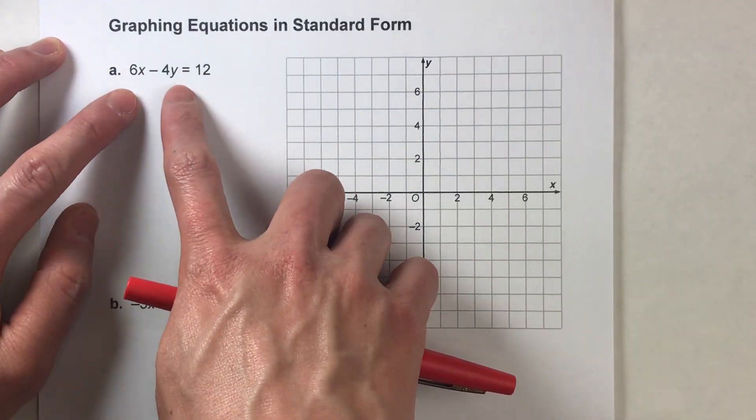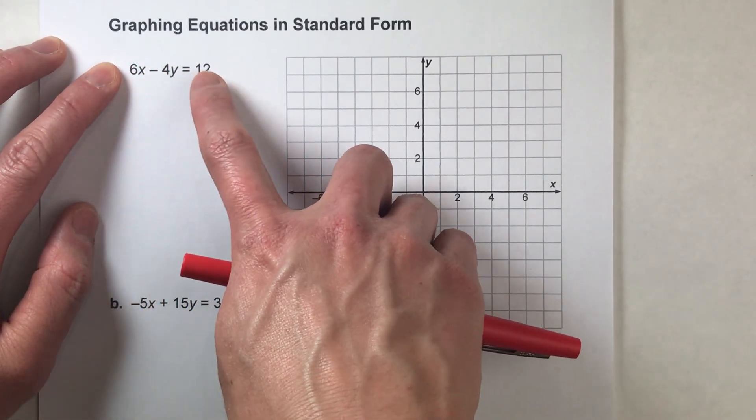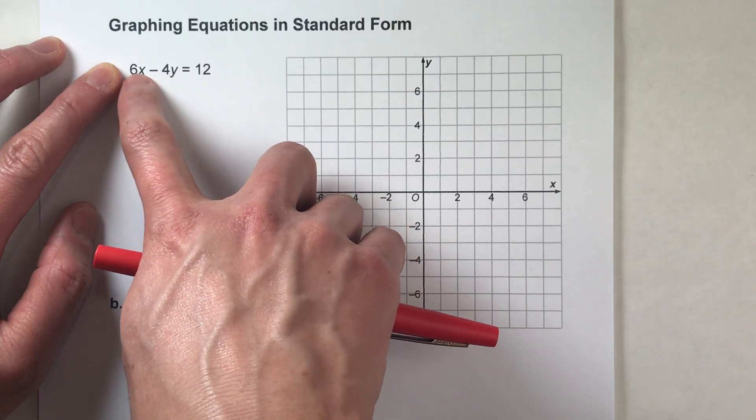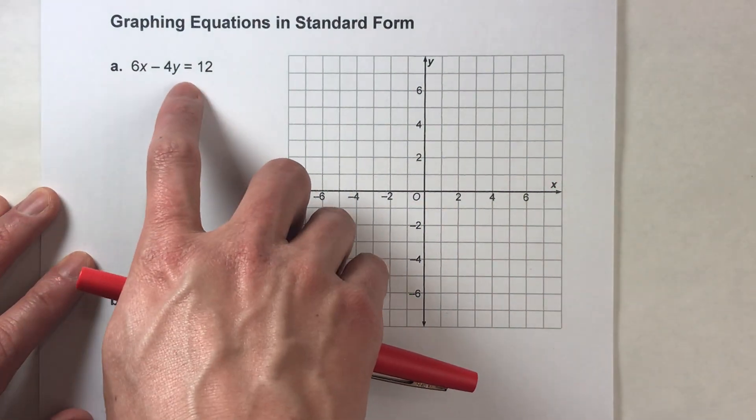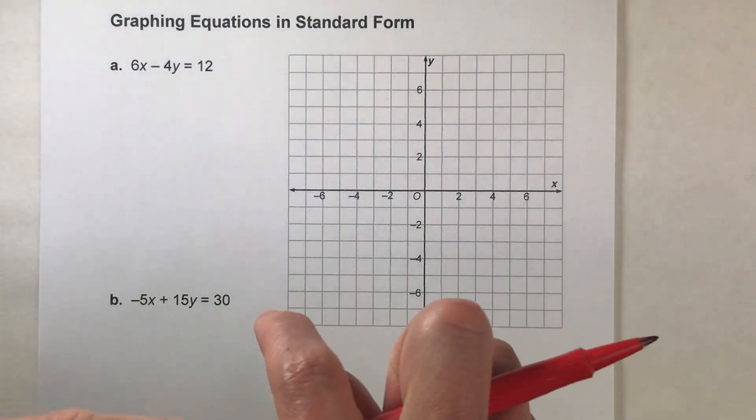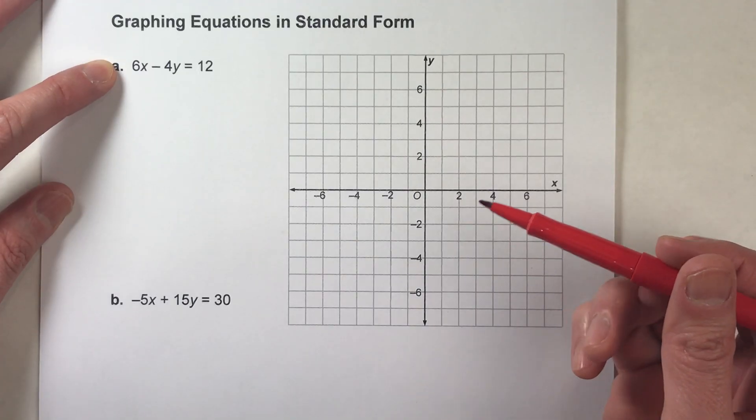So basically what we want to do is find the combination of x and y that makes this side of the equation equal 12. And the combination of x and y that makes this side equal to 12 is going to be a point on the line. And if we can find two of those points and draw a line through it, we'll have our line. But we're going to use the intercepts because those are the easiest points to find. Here's what I mean.